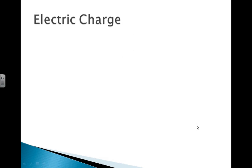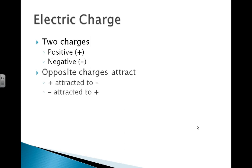Electric charge. There are two kinds of charge. We can have positive charge and negative charge. And we know that opposite charges attract each other. So positives are attracted to negatives, and negatives are attracted to positives. Like charges also repel. So two positive charges will repel each other. And two negative charges will repel each other.